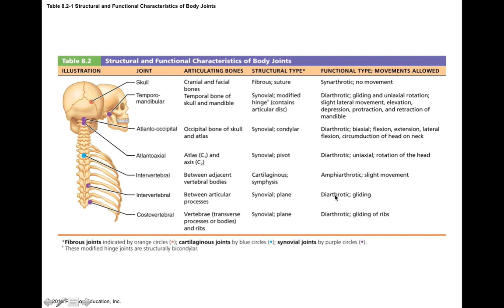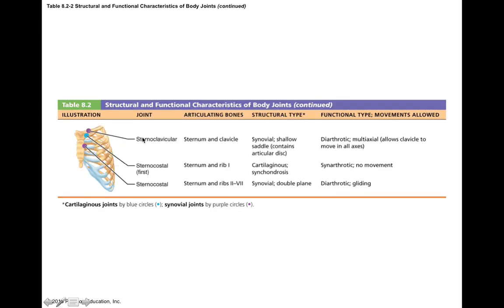The sternoclavicular joint, where the sternum and clavicle meet, is a synovial joint and freely movable — which makes sense since the clavicle is part of the pectoral girdle supporting the upper appendage, and you can feel it moving against the sternum when you move your arm. The sternocostal joint, where the ribs meet the sternum, is a cartilaginous joint made of hyaline cartilage, making it a synchondrosis. It's synarthrotic, so these bones don't move much against each other, though the cartilage can expand a little.